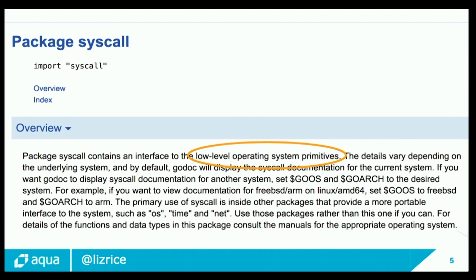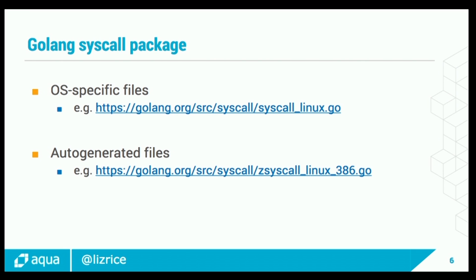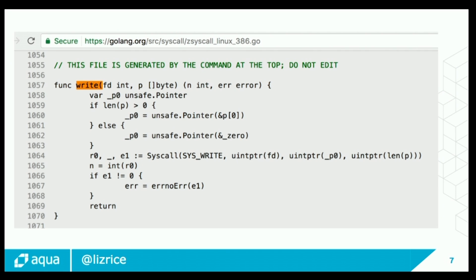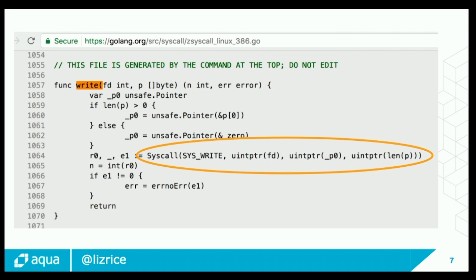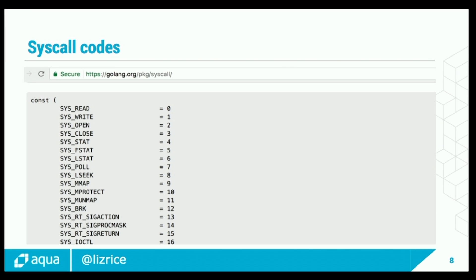Inside the syscall package, there are some OS-specific files and a whole bunch of auto-generated files that depend on the OS and platform you're running on. If we take write as an example, we can see what that function actually looks like — one of the auto-generated ones. In there, we see this function syscall. All of these syscalls boil down to one function called syscall. The first parameter is an identifier for which system call you want to run — in this case, SYS_WRITE. There are about 303 of these on Linux. Some are really esoteric, and some are read, write, open, close — we can take a pretty good guess at what those are doing.